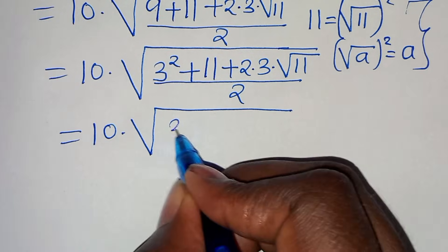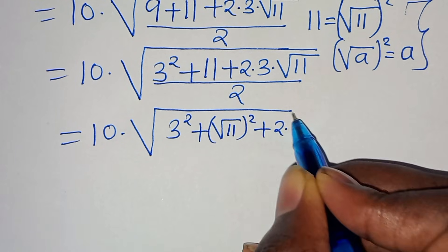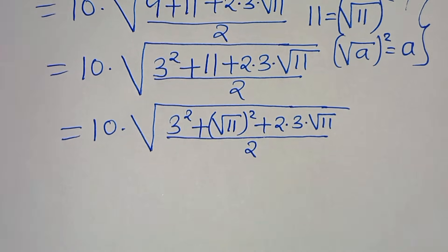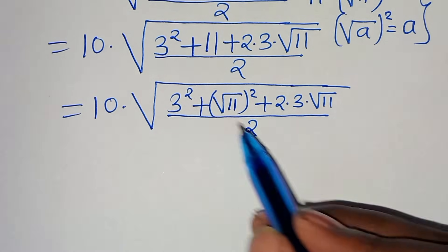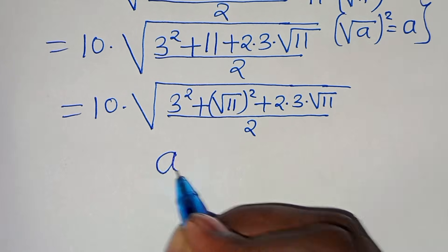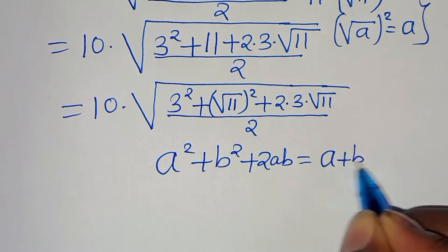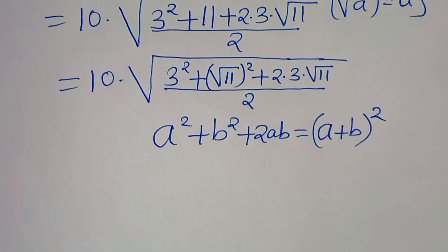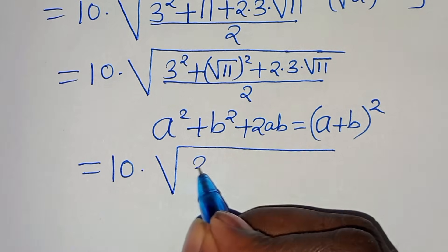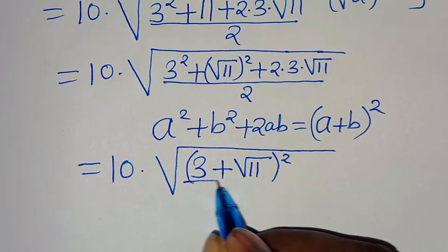This implies we have 3 squared plus square root of 11 squared plus 2 times 3 times square root of 11, all divided by 2. This expression is in the form of a squared plus b squared plus 2ab, which can be expressed as the quantity a plus b raised to the power of 2. So we have 10 multiplied by square root of the quantity 3 plus square root of 11, all squared, divided by 2.